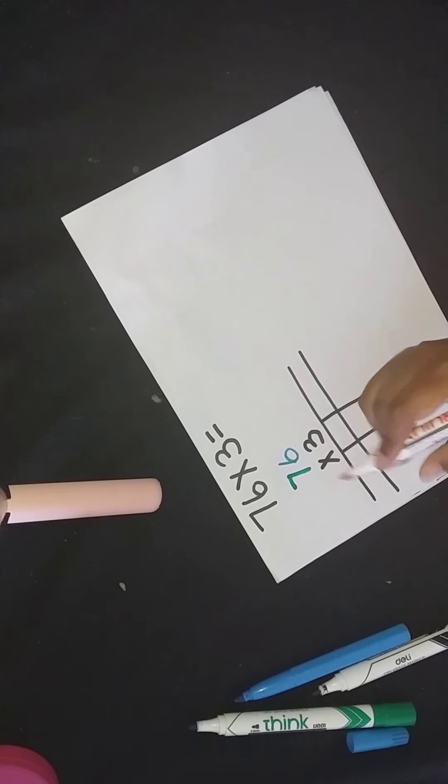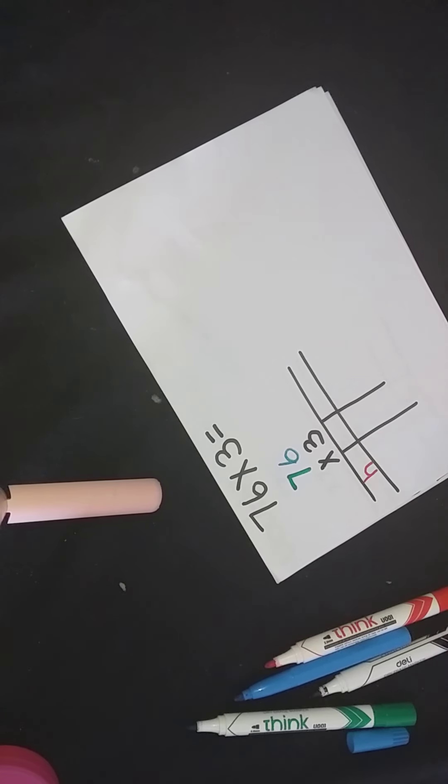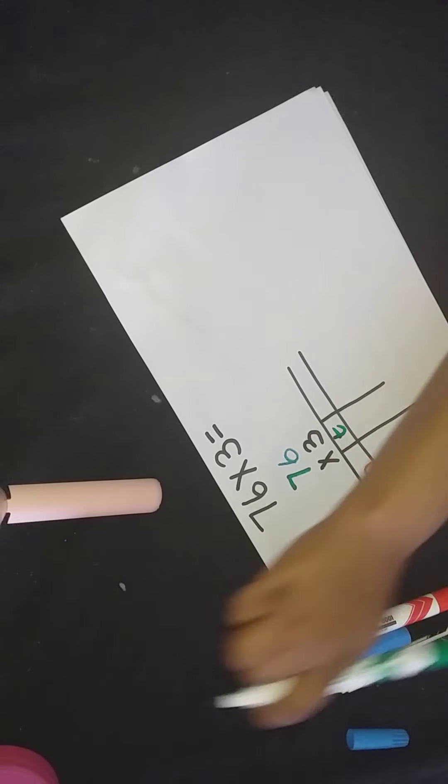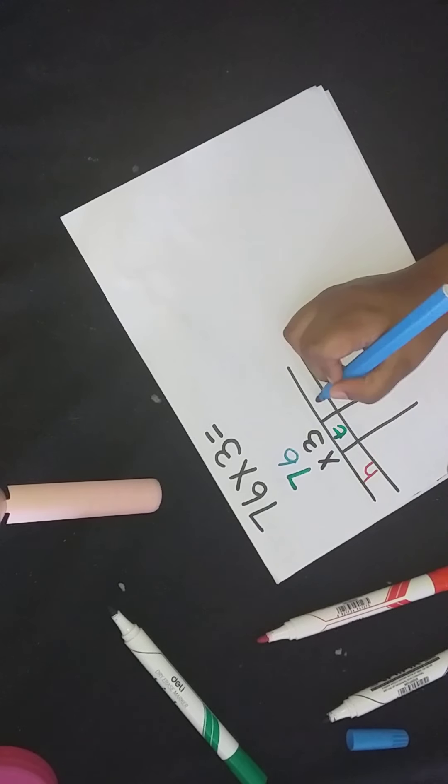And when I get the answer, I will break it down in the column method. I don't know if I will get hundreds, but we put in our hundreds in case. We put in our tens. There will definitely be tens. And we put in our units.